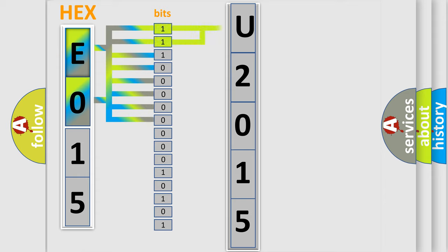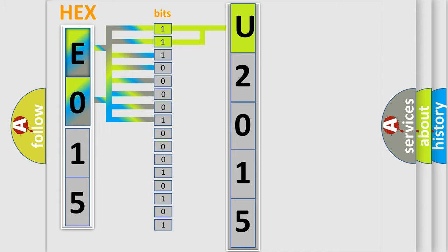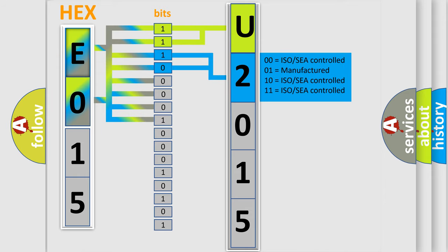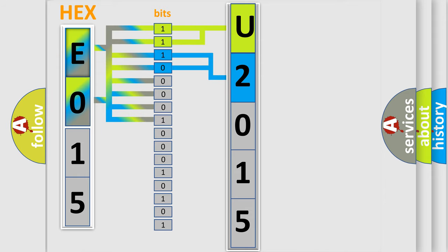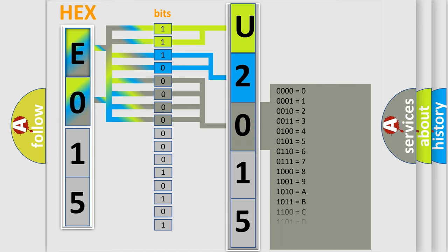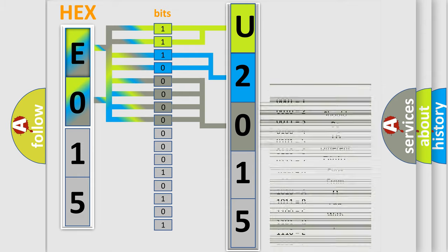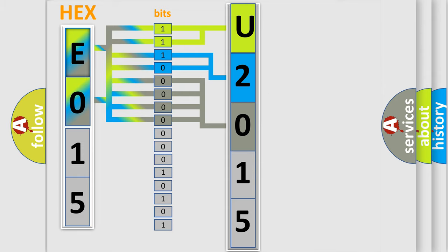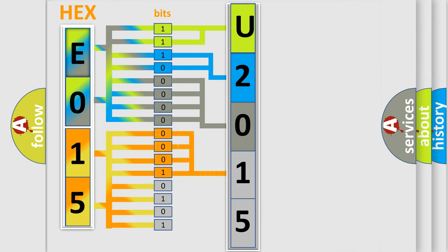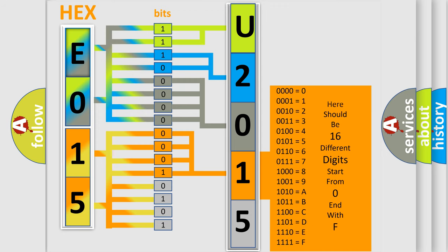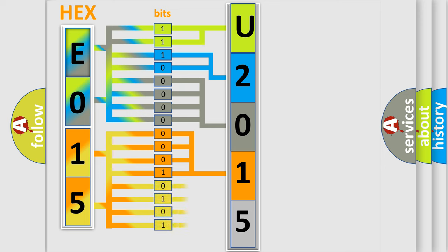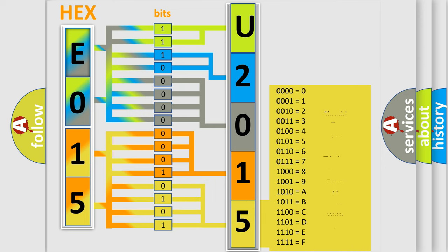By combining the first two bits, the basic character of the error code is expressed. The next two bits determine the second character. The last bits of the first byte define the third character of the code. The second byte is composed of a combination of eight bits. The first four bits determine the fourth character of the code, and the combination of the last four bits defines the fifth character. A single byte conceals 256 possible combinations.